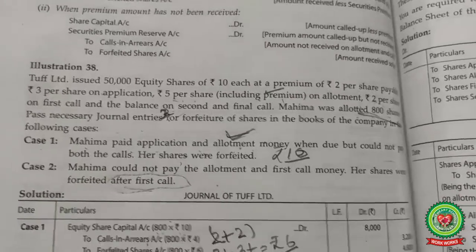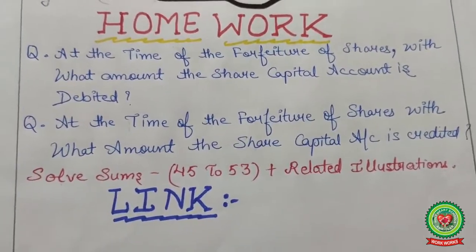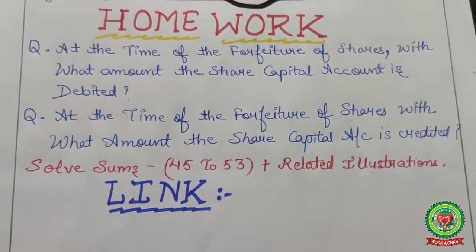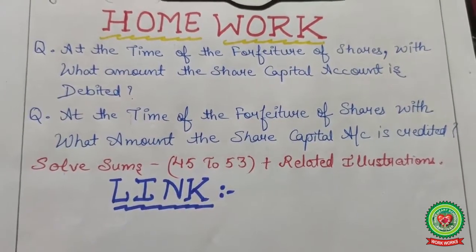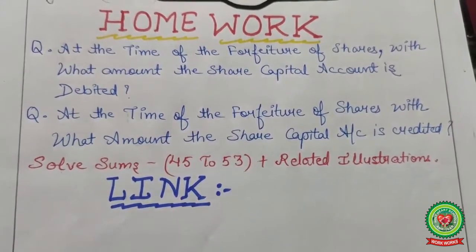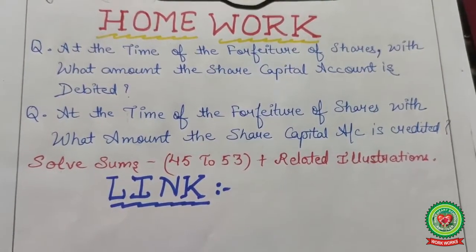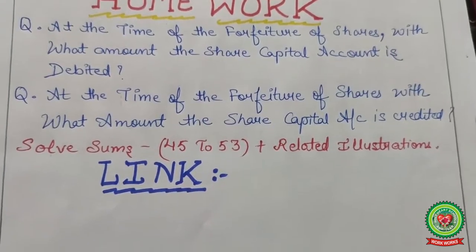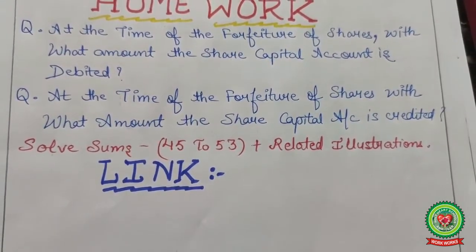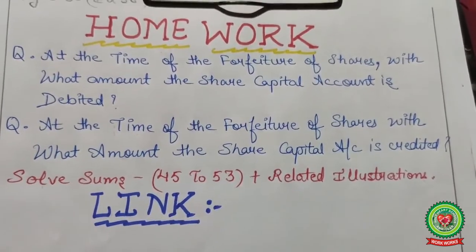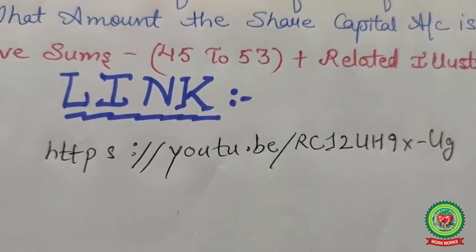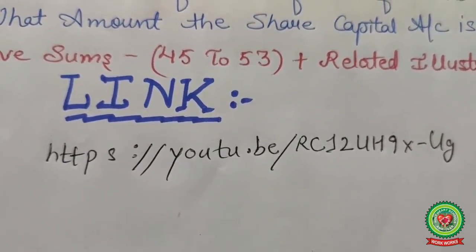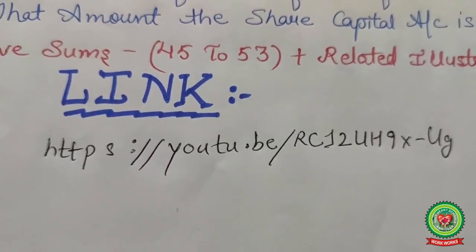Now for homework: at the time of forfeiture of shares, with what amount is the share capital account debited? And with what amount is the share capital account credited? Also solve sums 45 to 53 along with the related illustrations. Students must also refer to the provided links and watch the videos on YouTube for a better understanding of the topic. Thank you.